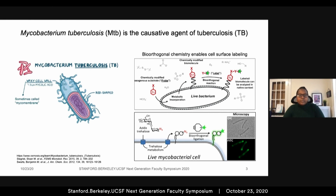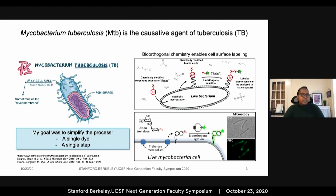After washing away unreacted cyclooctyne probes, the now fluorescently labeled cells are detected with a fluorescence microscope. This clever setup was useful for research purposes and was already used to probe cell surface molecular dynamics, but my eye moved towards direct application to the clinics, particularly in low resource settings. So I began the project with a simple task: build a similar system using a single dye and preferably with a single labeling step.